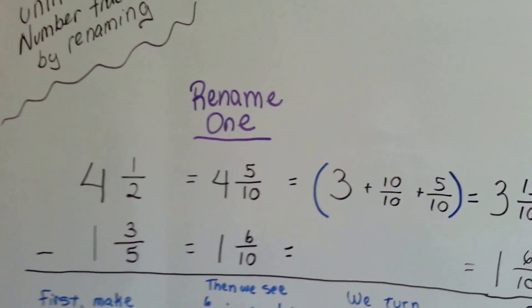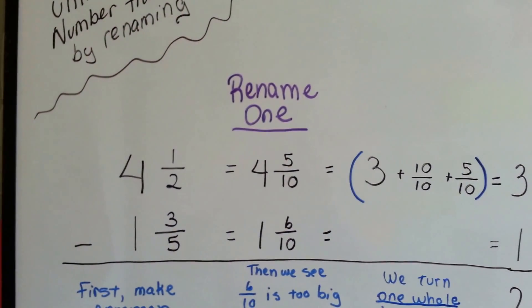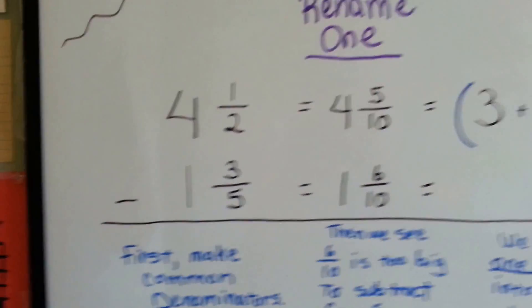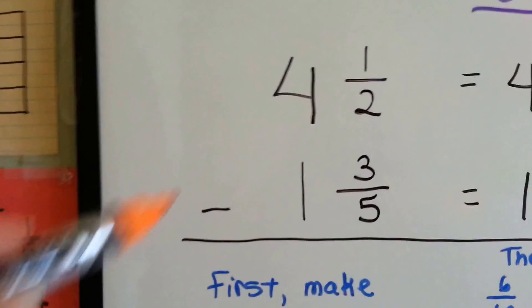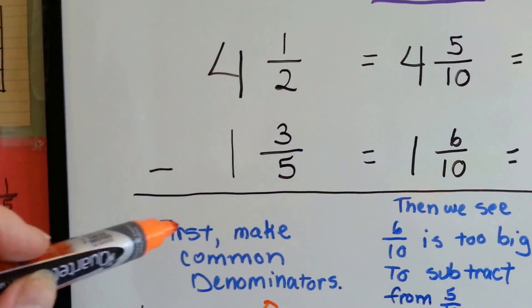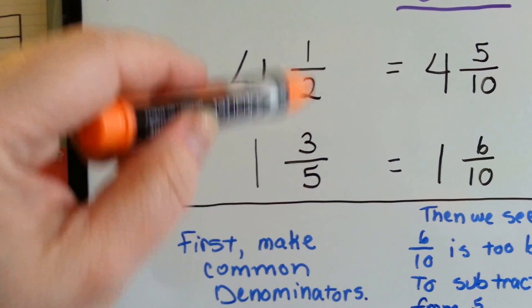We can do the subtraction of unlike mixed numbers by renaming just one of the numbers. In this problem, 4 and a half minus 1 and 3 fifths, the first thing we're going to do is make common denominators.